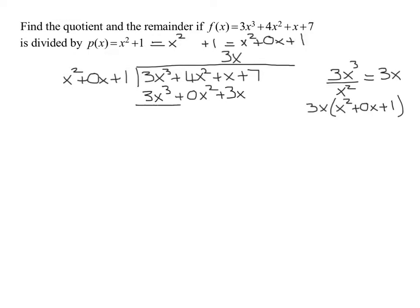Now if we hadn't put in that missing term of 0x, we would have ended up not having this term. And we would have had the 3x written under the 4x squared. And then of course we can't combine those like terms. So if you put in a blank or a 0x term, it helps keep everybody lined up.